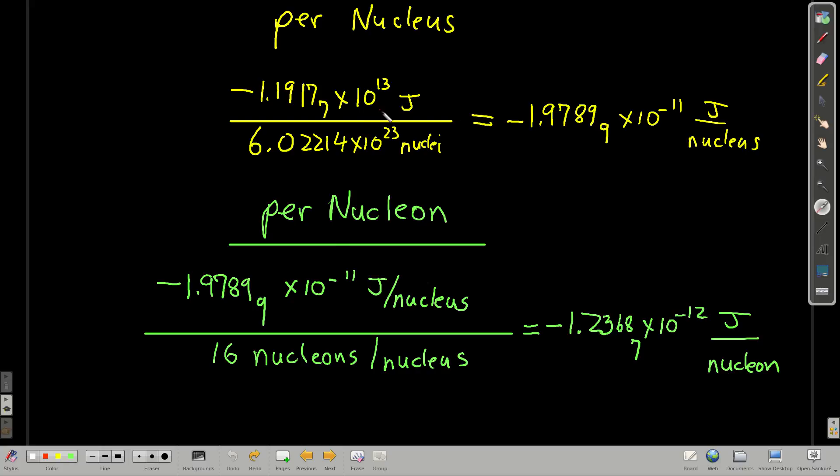Now, if we were to convert this, see how much energy per nucleus, right? So, remember we had a mole, so if we divide back out by Avogadro's number, this is the energy per nucleus that would be released, and per nucleon. A nucleon is just a neutron or a proton, something in the nucleus.